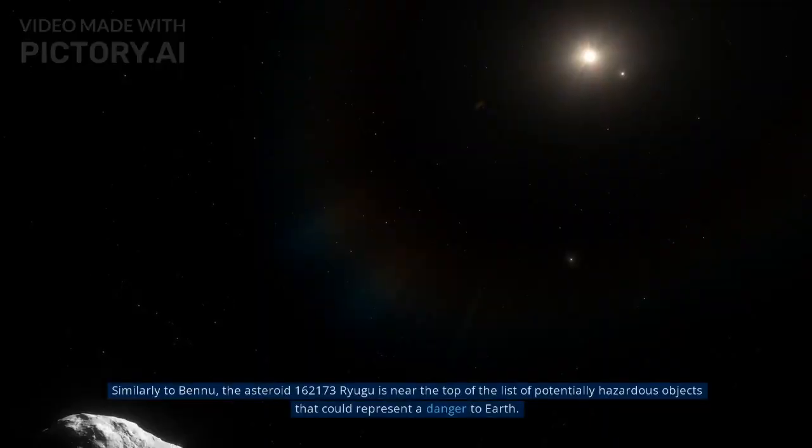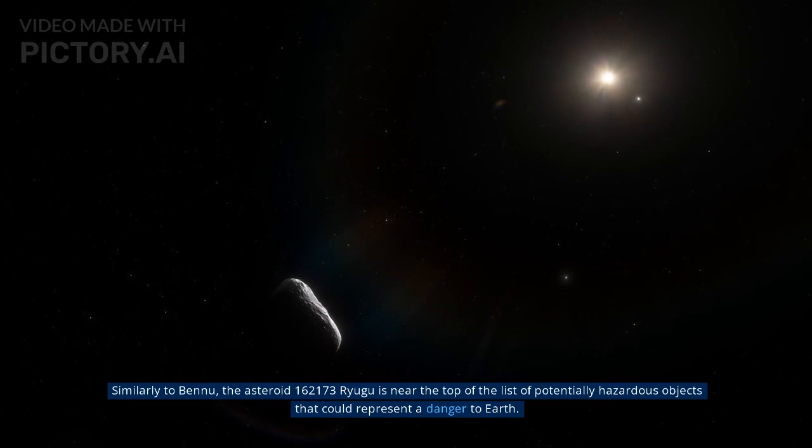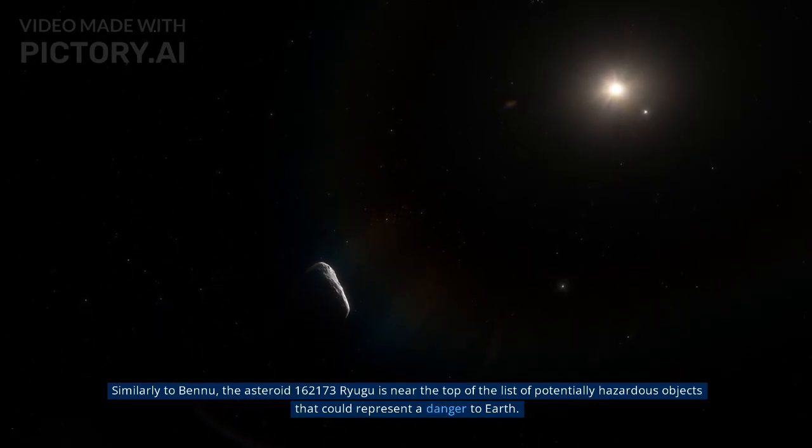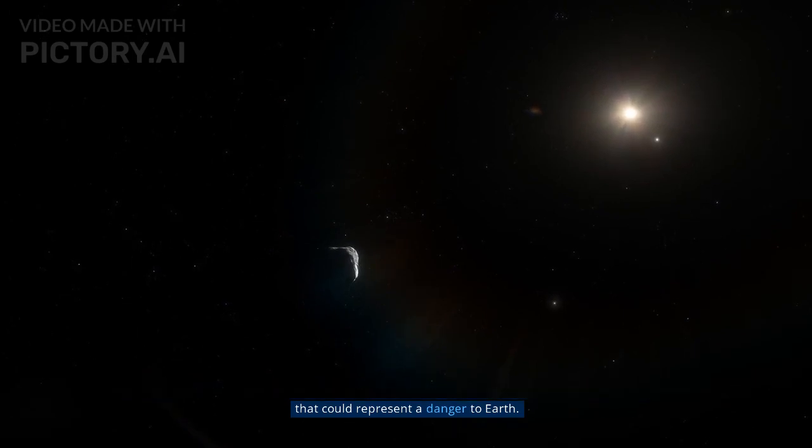Number 5: Ryugu. Similarly to Bennu, the asteroid 162173 Ryugu is near the top of the list of potentially hazardous objects that could represent a danger to Earth.